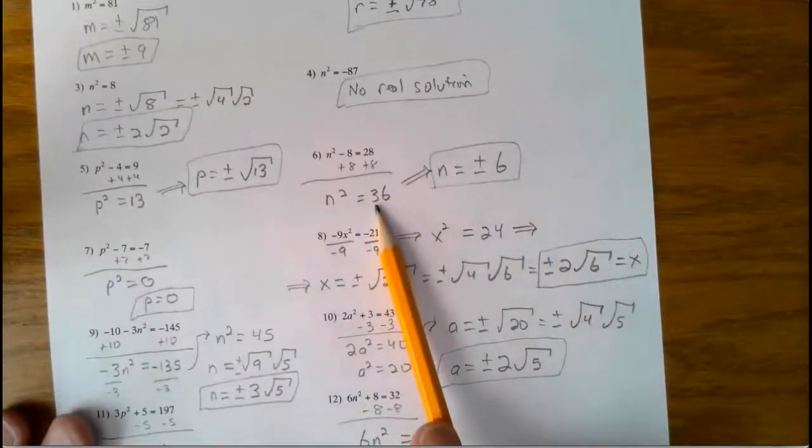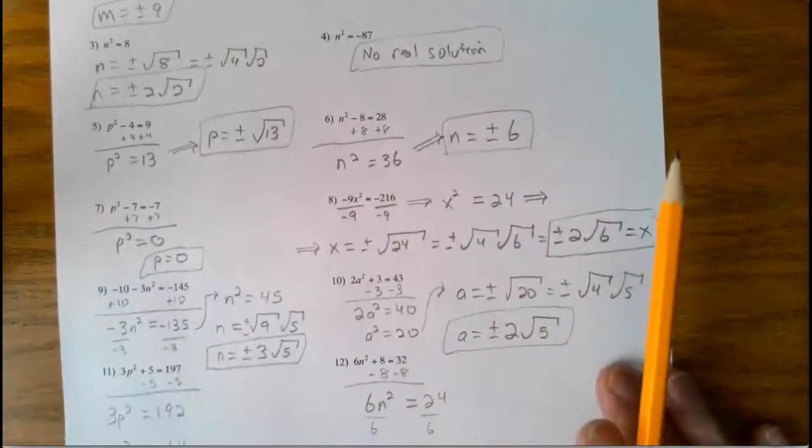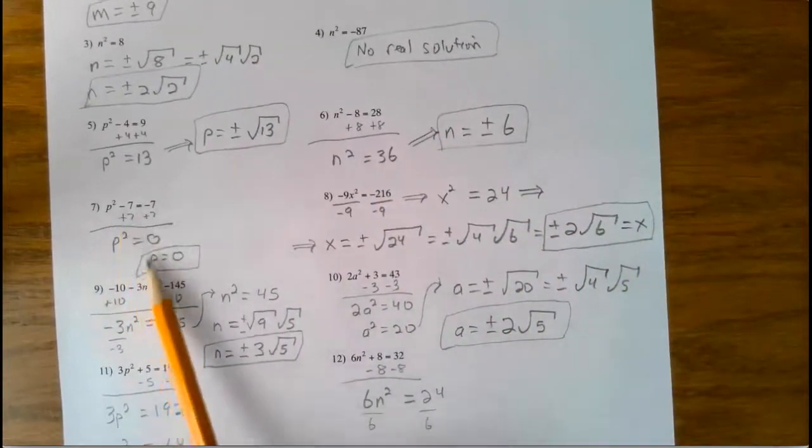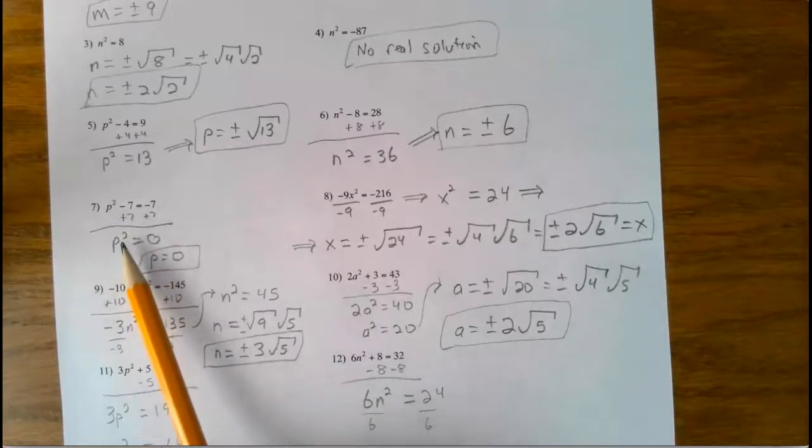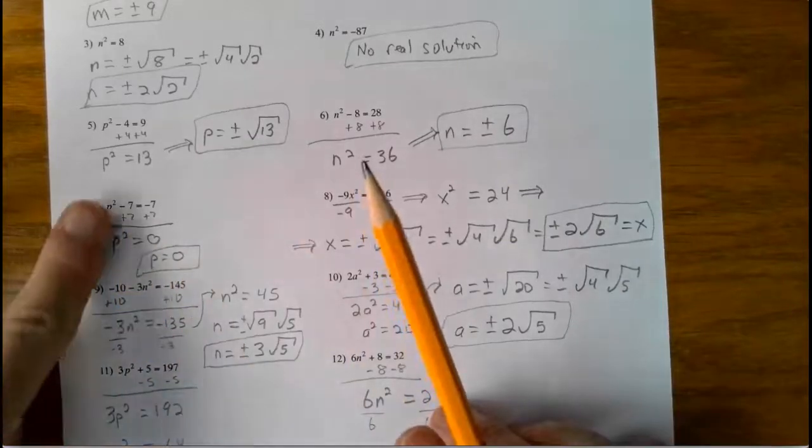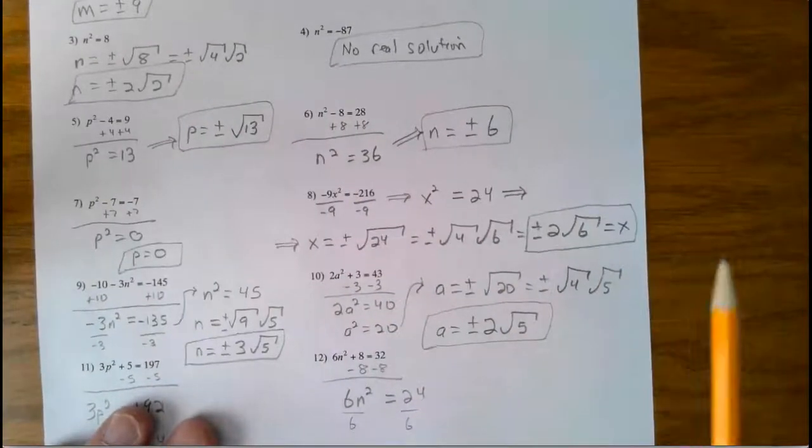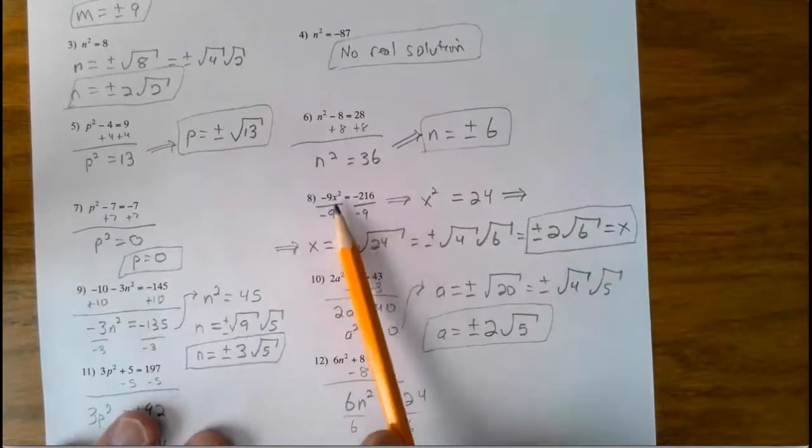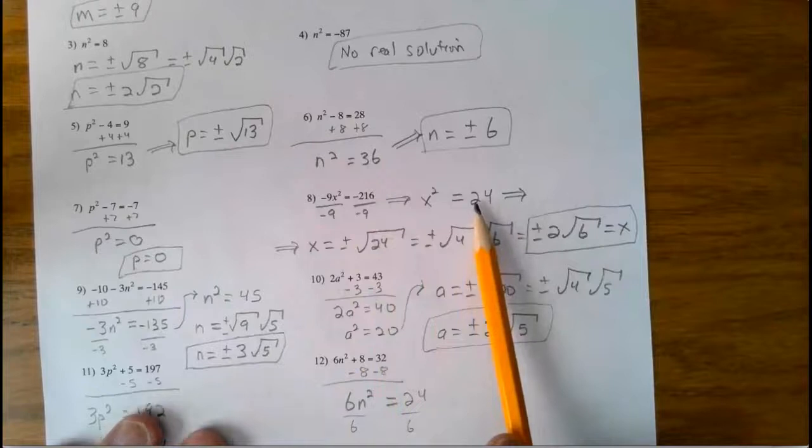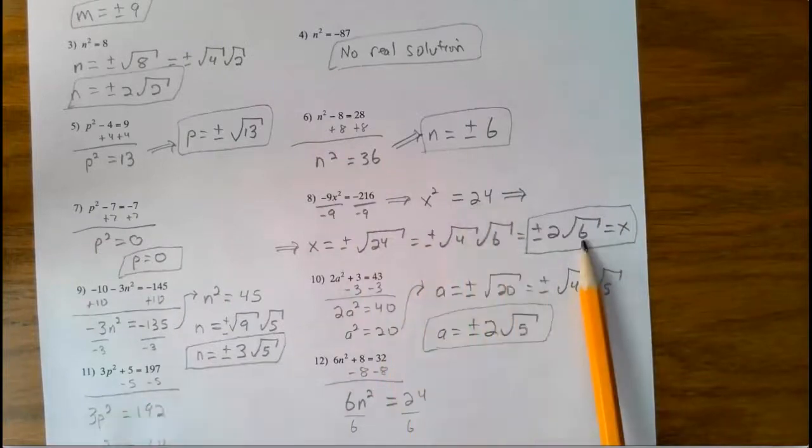This one ended up being 36, so it's plus or minus 6. So it was 0, guys. So P was just 0. Of course, guys, if P is 0, negative 7 equals negative 7. This one here, divide each side by 9. Took the square root and got this.